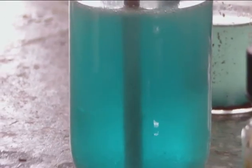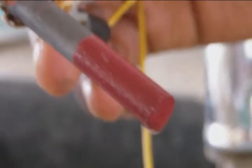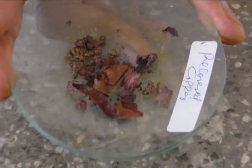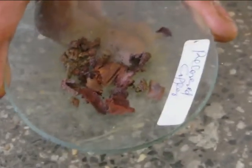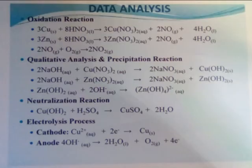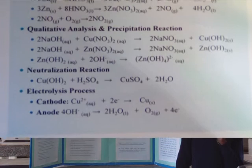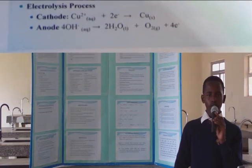During electrolysis using a laboratory setup, observations showed that the cathode started gaining a reddish copper coating, and finally the solution faded. After electrolysis, a solid copper deposit was obtained. In the electrolysis process, copper ions in the electrolyte are attracted to the cathode and gain two electrons to form copper metal, while at the anode, hydroxyl ions are attracted and release two electrons to form water and oxygen.